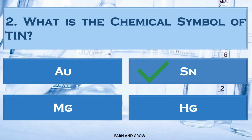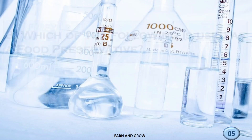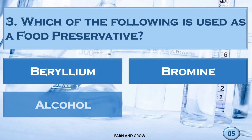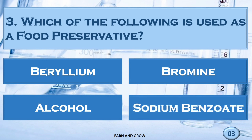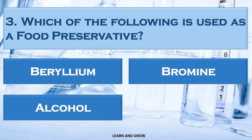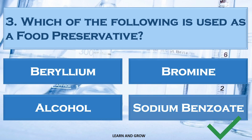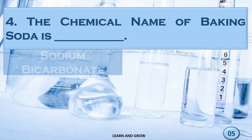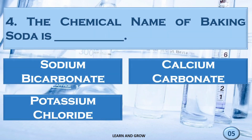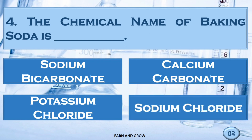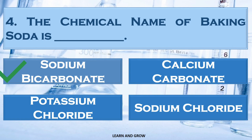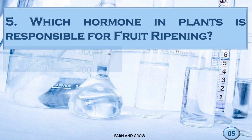The correct answer is Sn. Which of the following is used as a food preservative — sodium benzoate or sodium bicarbonate? Which hormone in plants is responsible for fruit ripening?